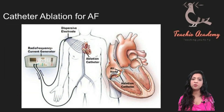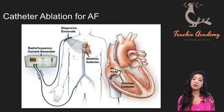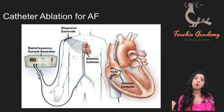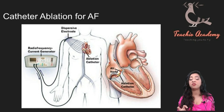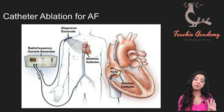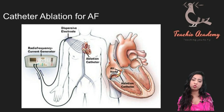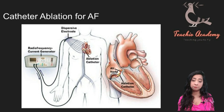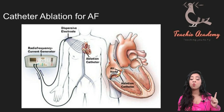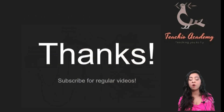Another strategy — not really new but increasingly tried — is catheter ablation for AF. The left atrial appendage is targeted using cryotherapy or a radiofrequency current generator, which ablates the AF-generating focus and helps the patient revert to sinus rhythm. You just need to know the names of these strategies for the PLAB 1 exam. The things to remember about AF are: what it looks like on an ECG, what strategies to use to correct it, and what new techniques are being used.